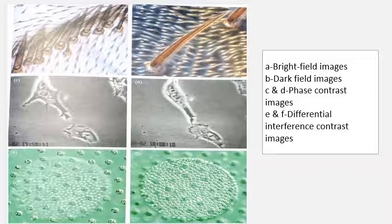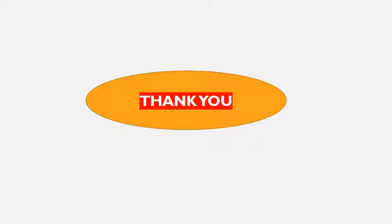Images C and D are captured with a phase contrast microscope, showing cells growing in tissue culture. Images E and F are captured by differential interference contrast (DIC) microscopy, showing two focal planes of a multicellular alga.